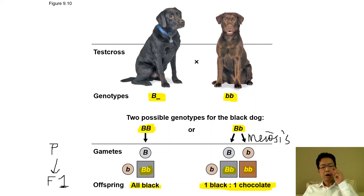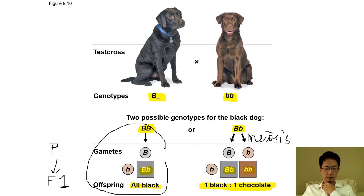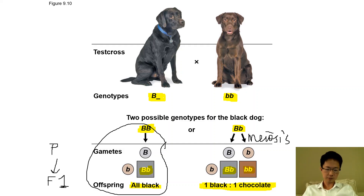In the heterozygous dominant test cross case, the phenotypic ratio and genotypic ratio are both 1:1, or 50/50 percent. In the homozygous dominant case, both ratios are 100% — phenotypic ratio is 100% black, and genotypic ratio is 100% heterozygous dominant (big B, small b).